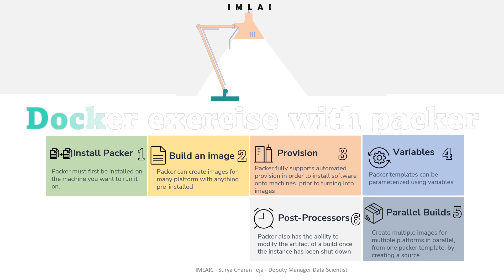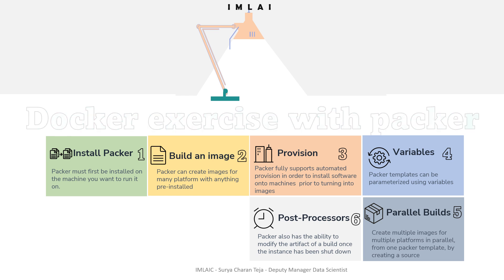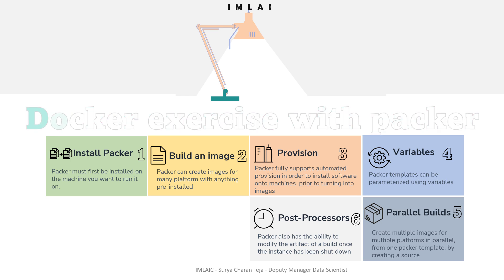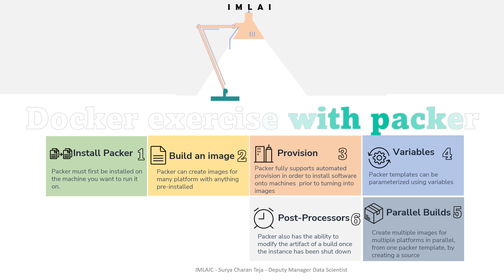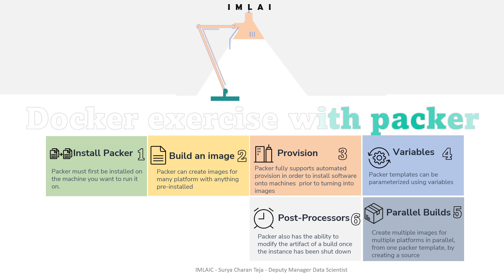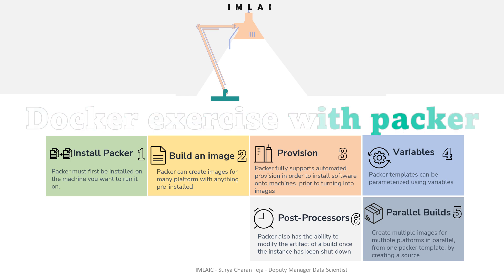Parallel build is a very useful and important feature of Packer. For example, Packer can build an Amazon AMI and a VMware virtual machine in parallel, provisioned with the same scripts, resulting in near-identical images. The AMI can be used for production and the VMware machine for development. Another example: if you are building software appliances, you can build for every supported platform in parallel from a single template.